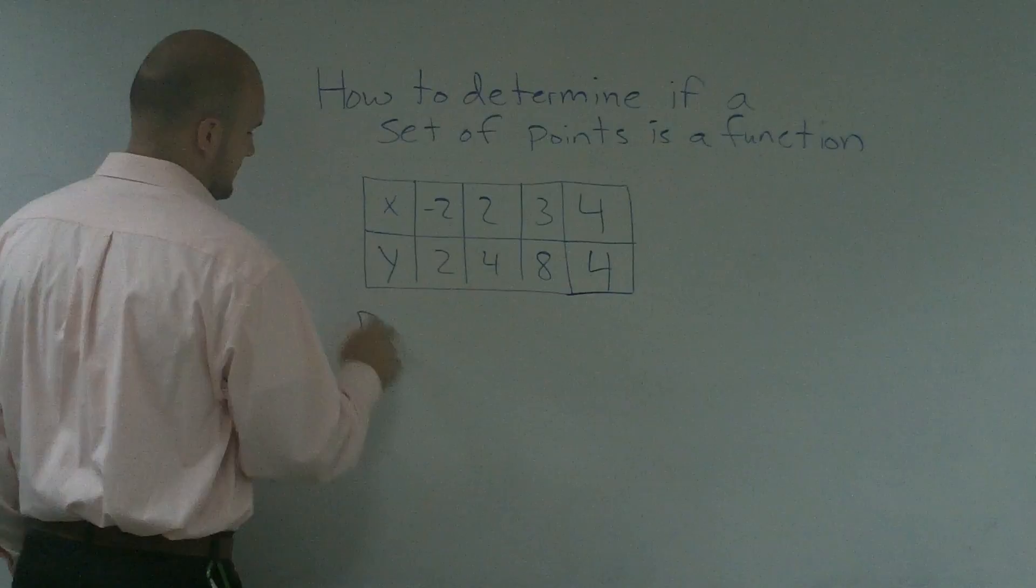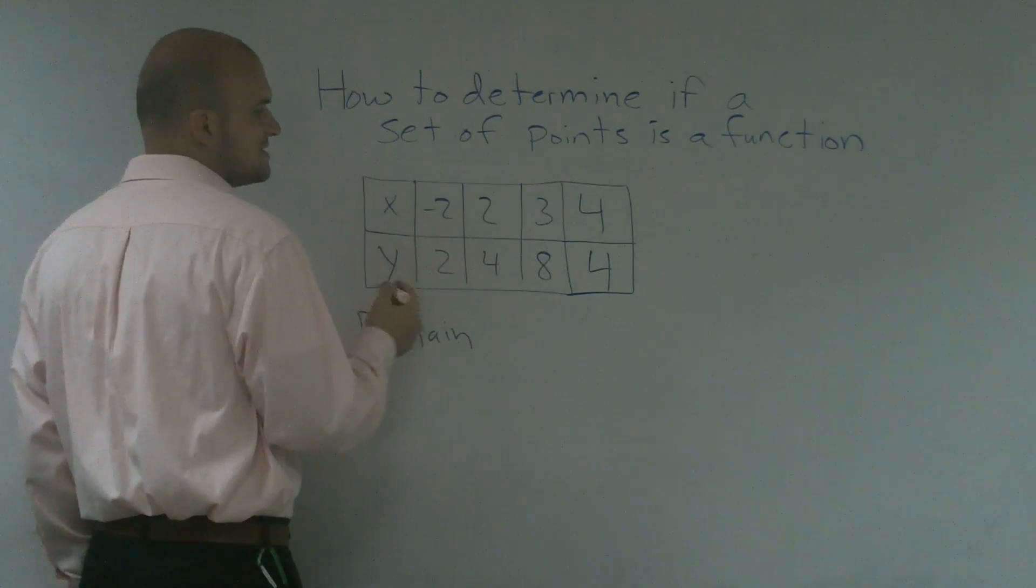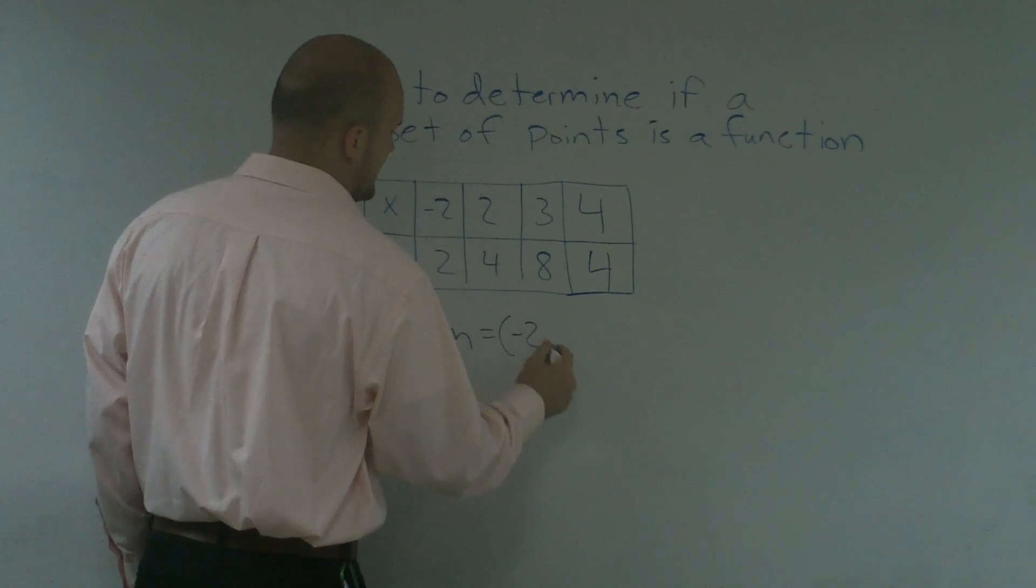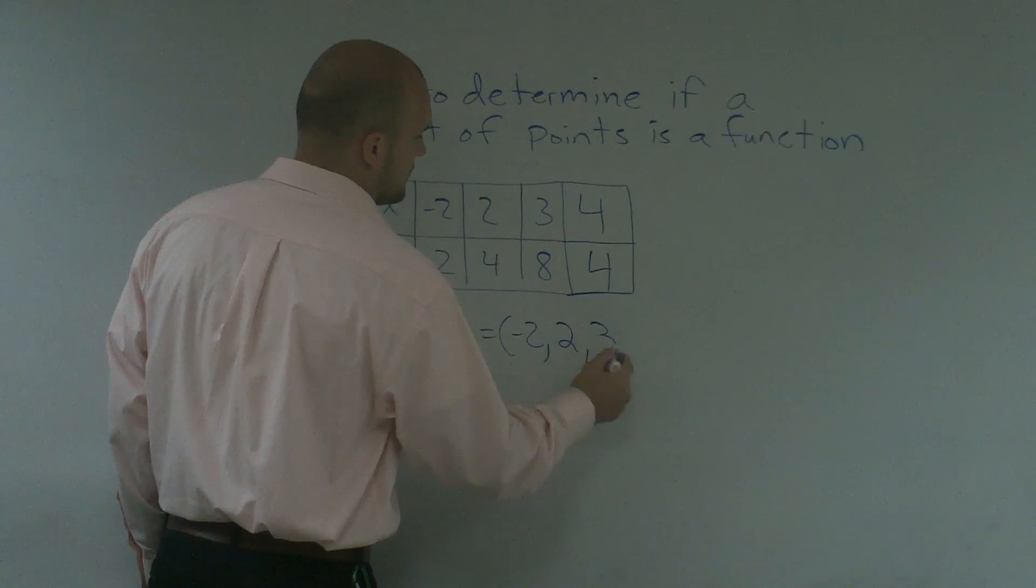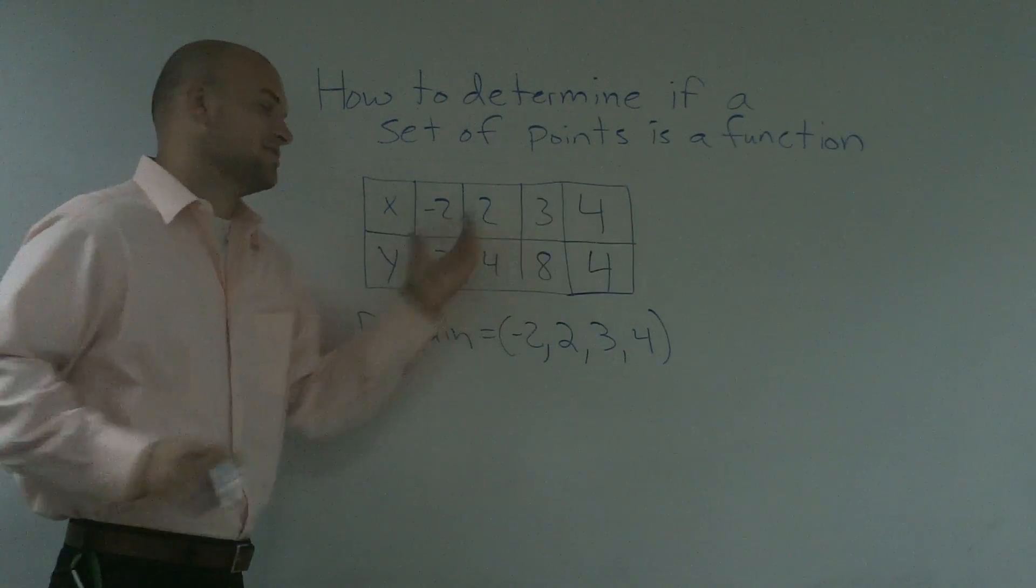First thing to remember, our domain is always our set of x coordinates. Therefore, our domain is going to be negative 2, 2, 3, and 4. The domain, remember, is always the x coordinates.